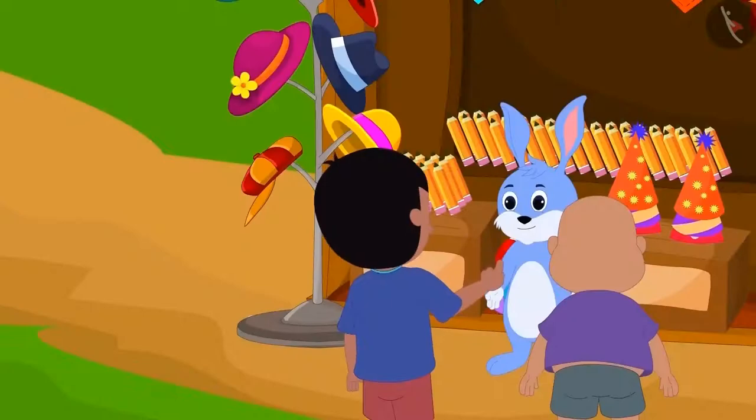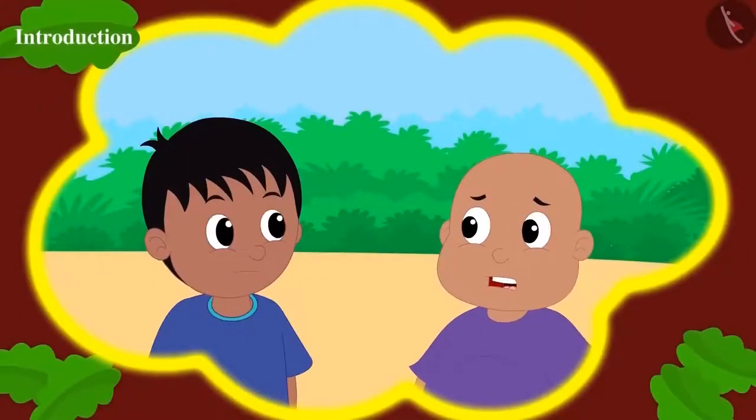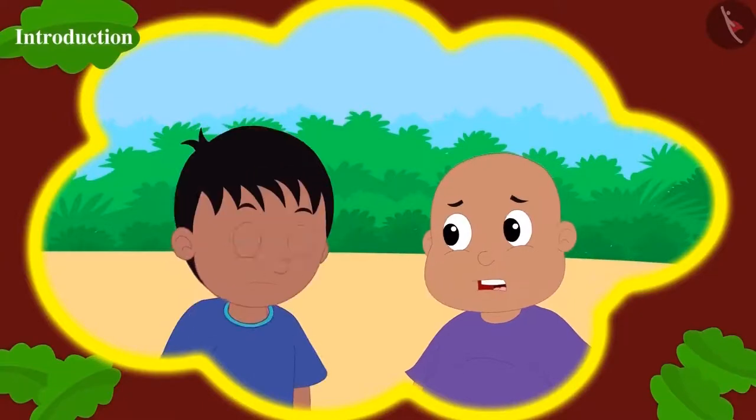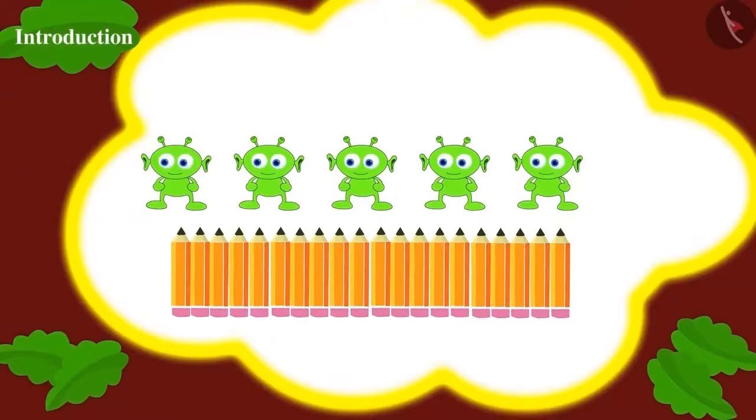They bought 20 pencils from Bunny's shop. Raju asks Bablu how they would distribute these pencils among 5 of Jeev's friends. Children, can you find the answer to this?